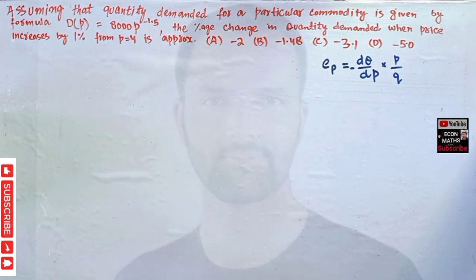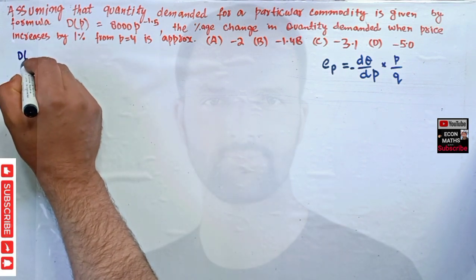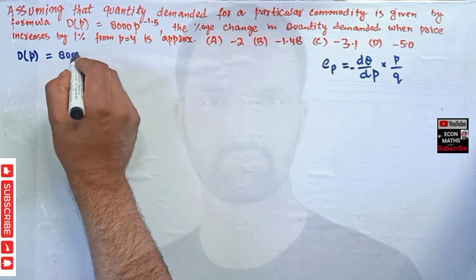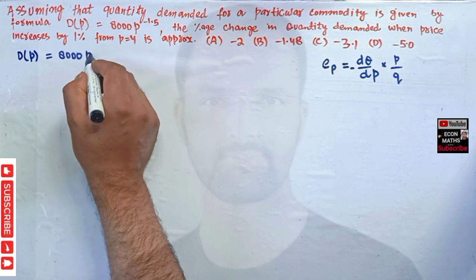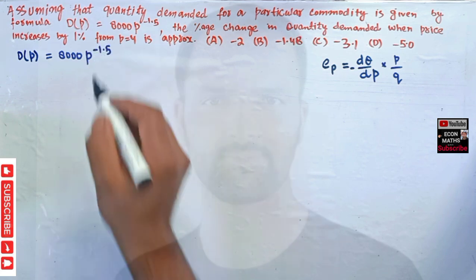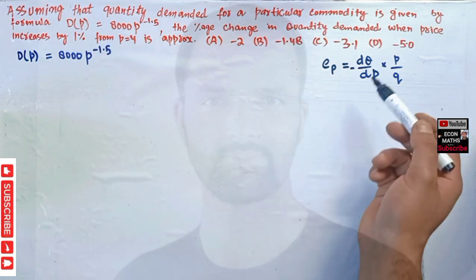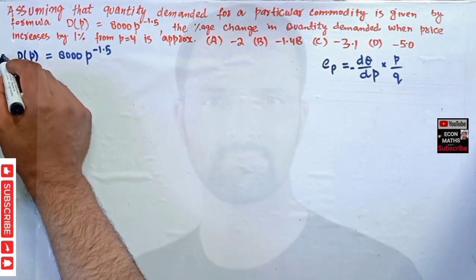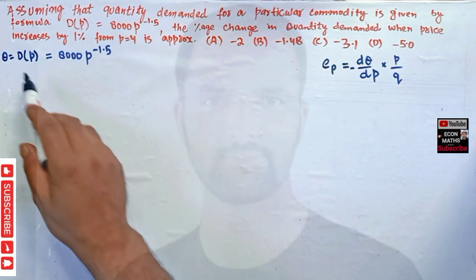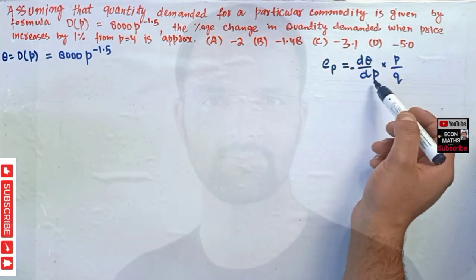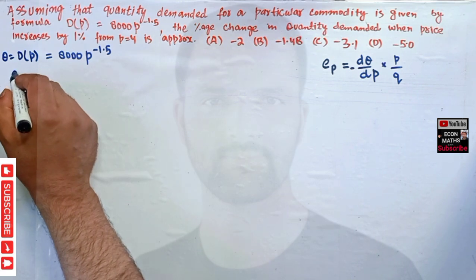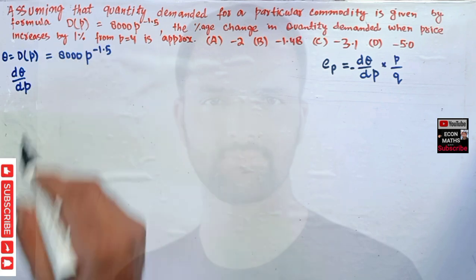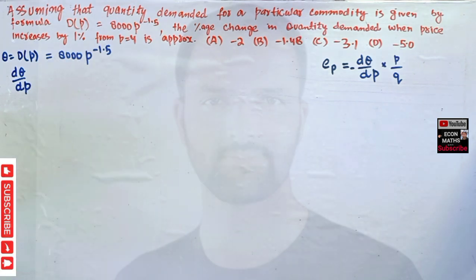Our demand function is D(p) = 8000 * p^(-1.5). So we can write Q = D(p), which is a function of price. Now, finding dQ/dP means differentiating this function with respect to price.